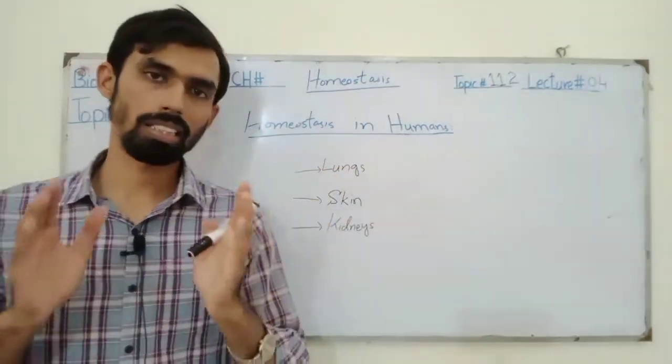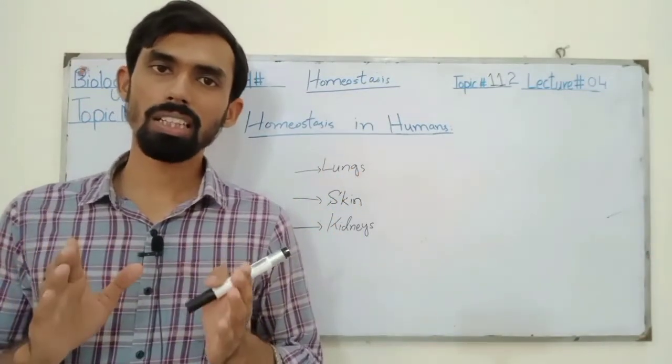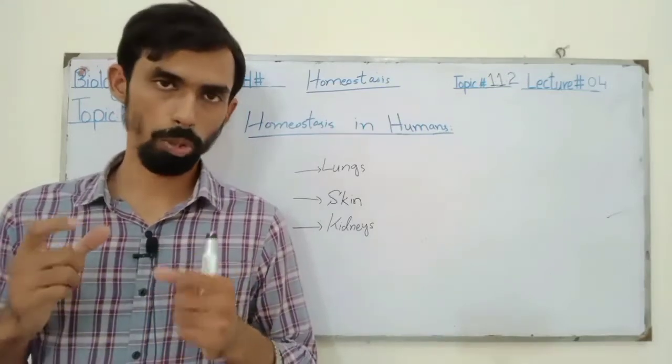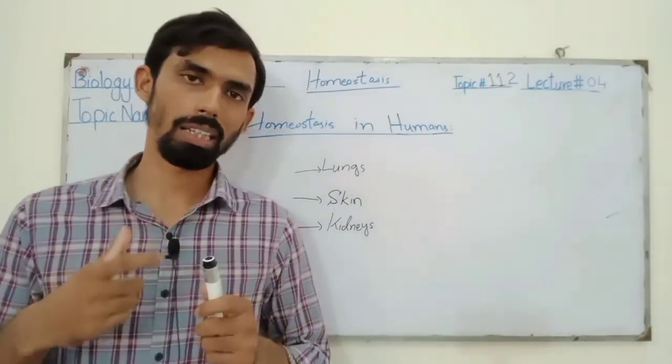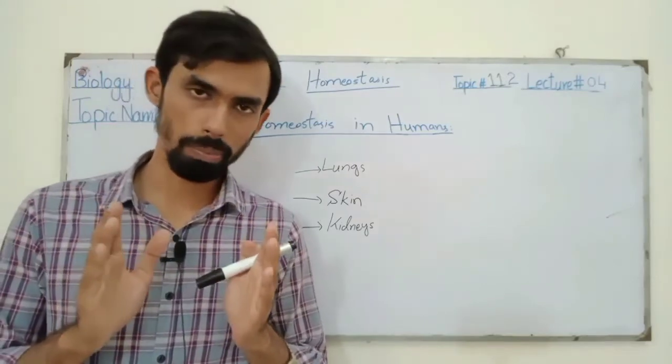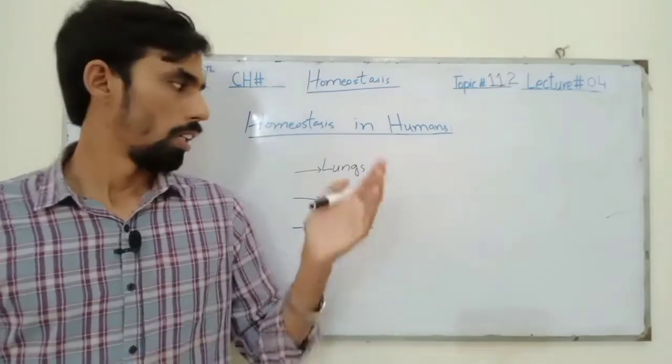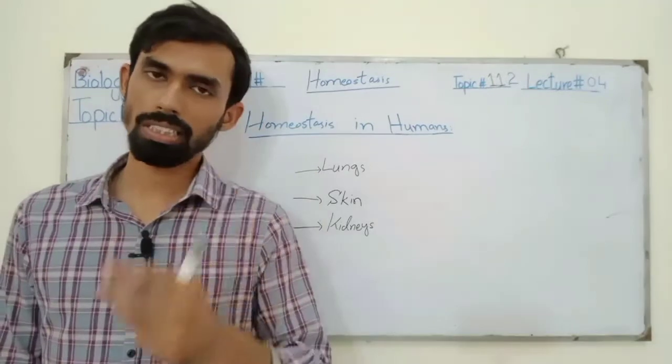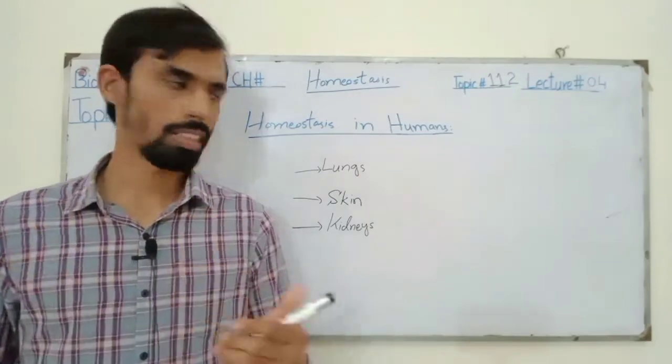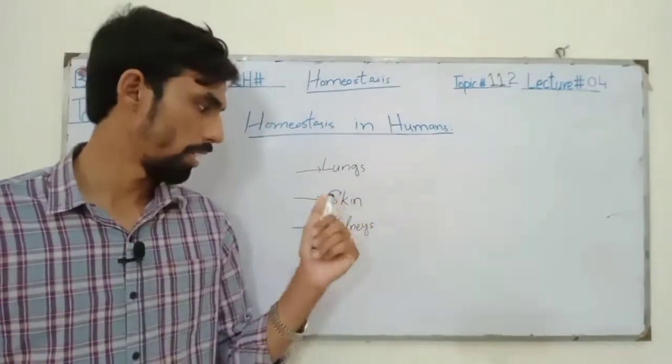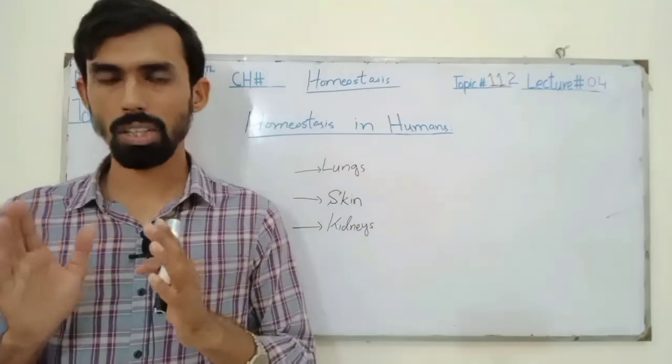In humans and other animals, there are very complex systems. In humans, it is also a very developed system for homeostasis. We see that there are three main organs in humans for homeostasis. Which are three organs? Lungs, skin, and kidneys. We have to discuss these three things - how humans use these for homeostasis.